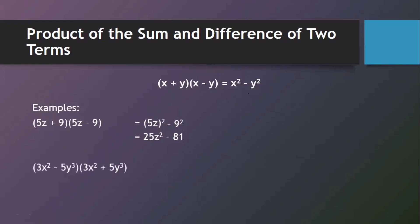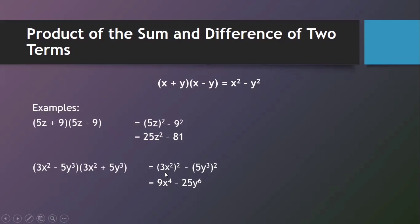Second example: (3x squared minus 5y cubed) multiplied by (3x squared plus 5y cubed). Applying the formula, we square the first term: 3x squared, quantity squared, then subtract the square of 5y cubed. Multiplying the exponents, 3x squared quantity squared equals 9x to the 4th, and 5y cubed quantity squared equals 25y to the 6th. So the final answer is 9x to the 4th minus 25y to the 6th.